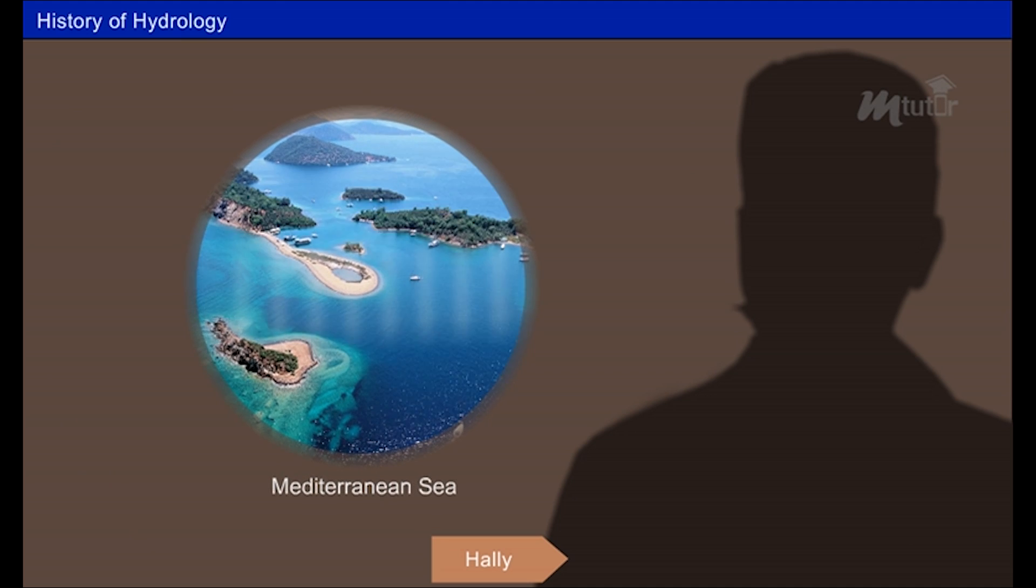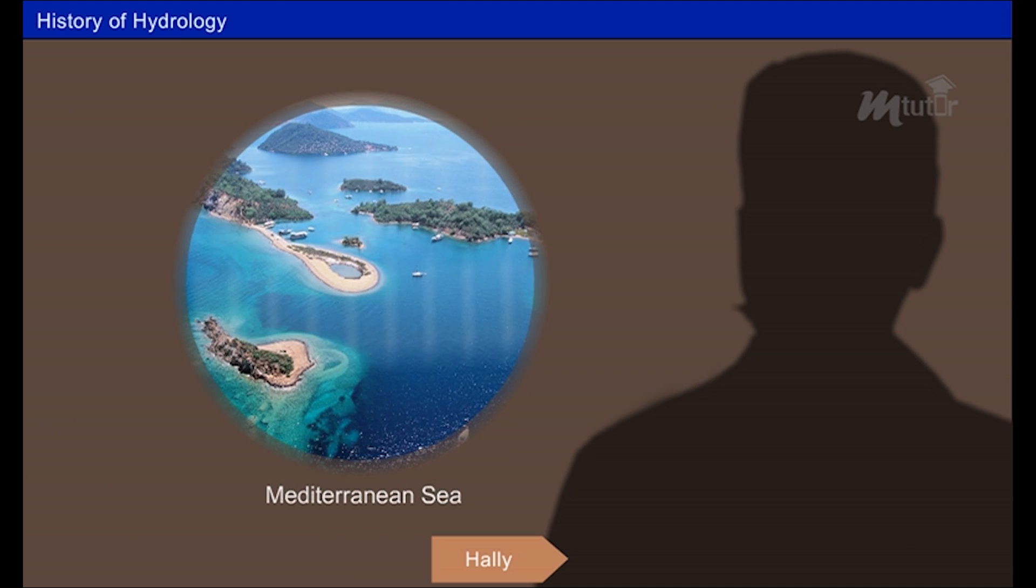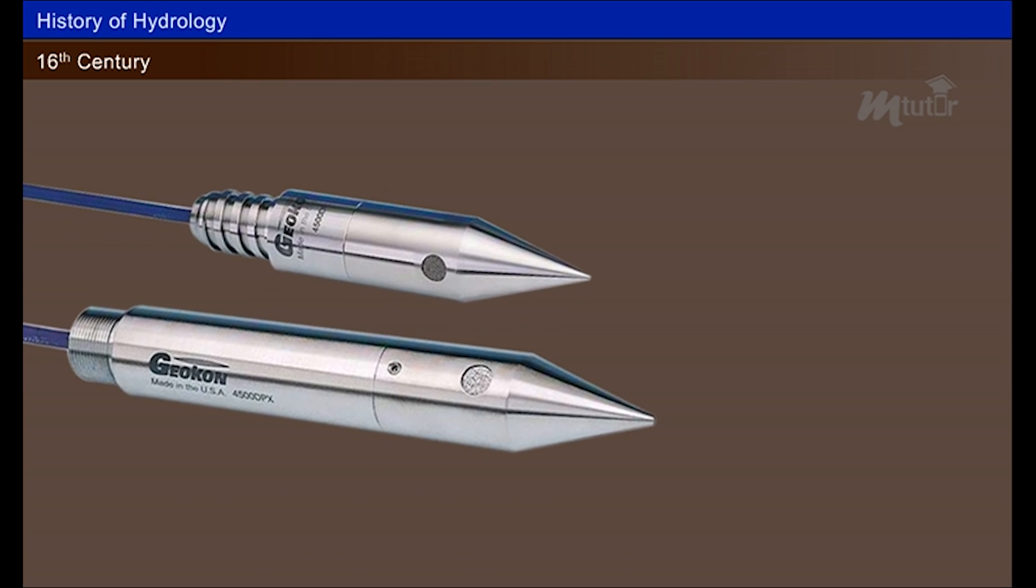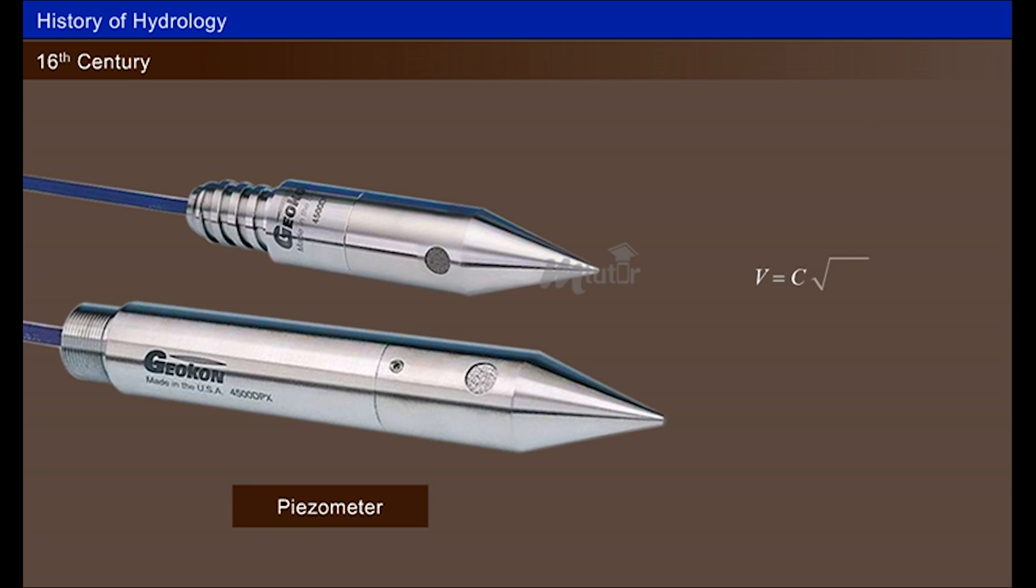However, the instrument used by him is still a mystery. Many important instruments and the theory of hydrology such as Pizometer, Chesey's formula, rain gauges etc. were modernized during the 16th century.